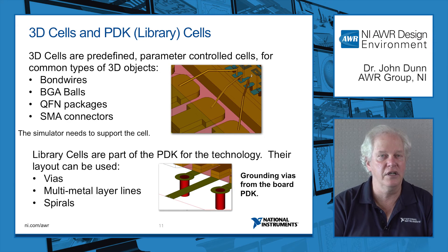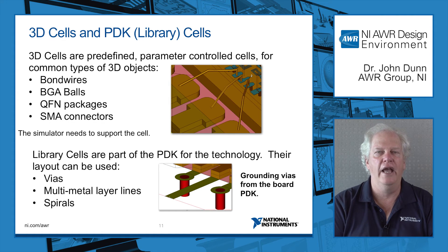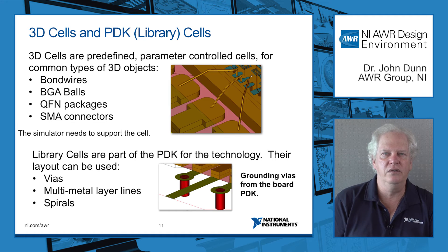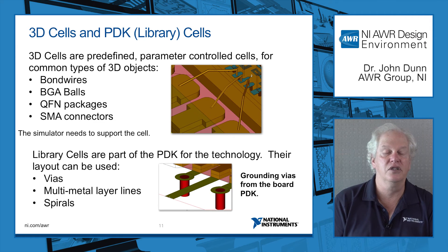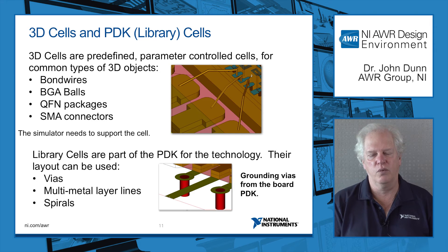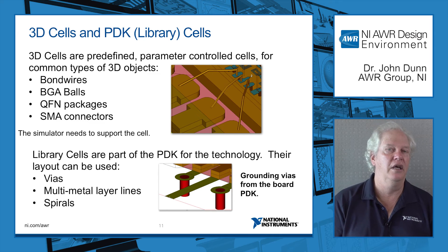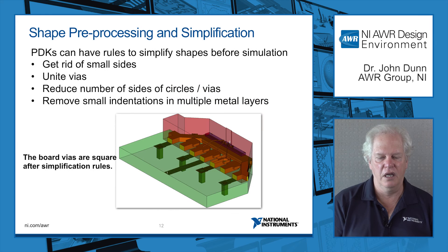If you have a shape that isn't in our libraries, we have a 3D editor where you can create your own, typically parameterize it, and add it to the library for fellow engineers to use. Also, remember these PDKs typically have pre-configured library cells — for example, vias on your board, FET fingers in your MMIC devices, spiral inductors. You can drag those into the EM layout without redrawing them. In the lower picture, those vias are P cells and the line is an emlin element — complete capability of using all PDK features.